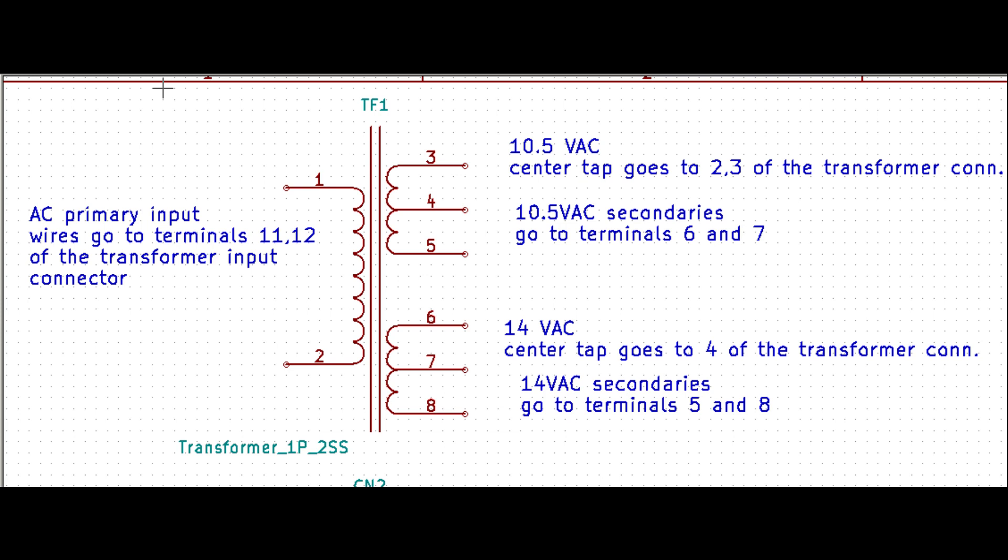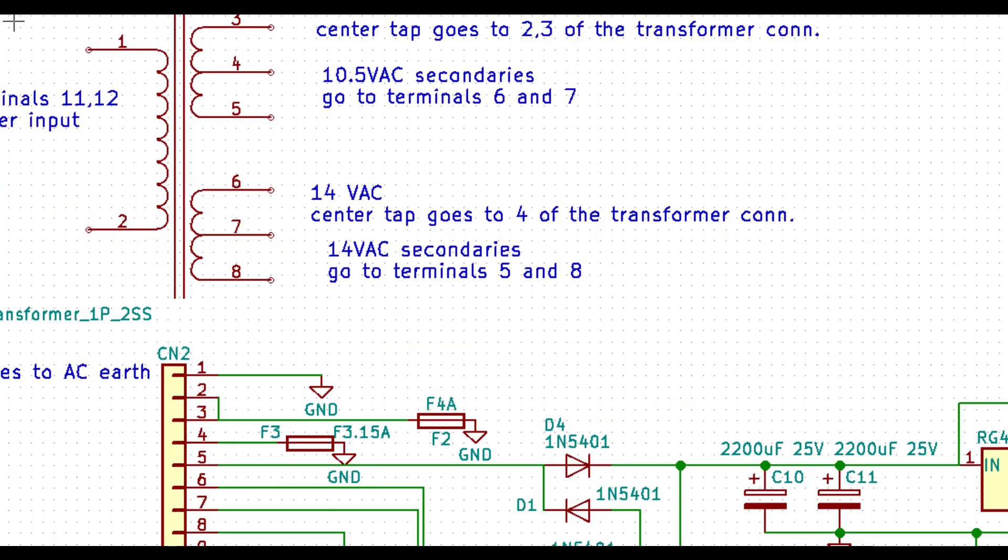First of all, all the voltages are obtained with a power transformer, having two secondary windings, both of them center tapped. This allows getting two opposite polarity DC supply rails out of each secondary winding.